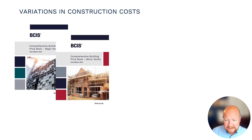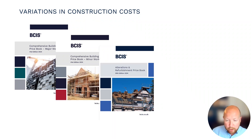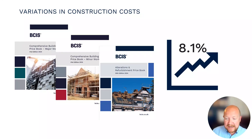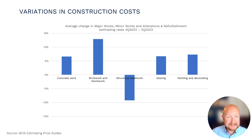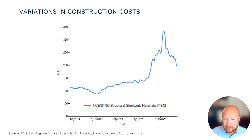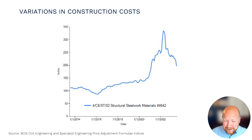This data is hot off the press from our estimating guides — our major works, minor works, and alterations and refurb data sets available as printed price books and our online schedule of rates. There was on average an increase of 8.1 percent from the second quarter of last year to the second quarter of this year, but within that average there is significant variability. This chart shows a selection of trades and as you can see they are not uniform. Looking at structural steelwork specifically, our civil engineering and specialist engineering indices show that materials cost inflation for structural steelwork remains historically high going back to the end of 2013.